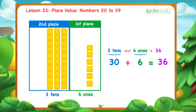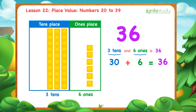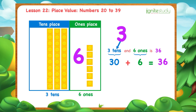Remember, the first place contains 1s, so it's called the 1s place. The second place contains 10s, so it's called the 10s place. Also, notice number 36 is formed with 2 digits: the digits 3 and 6. The digit 6 corresponds to 6 ones. The digit 3 corresponds to 3 tens. So we say, the digit 6 is in the 1s place, and the digit 3 is in the 10s place.